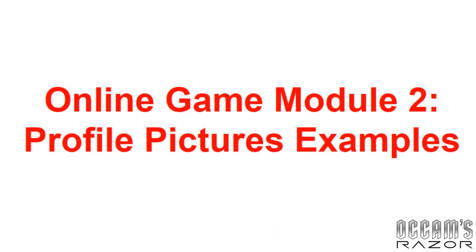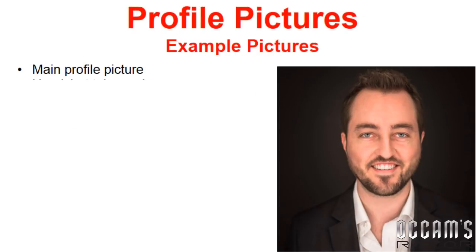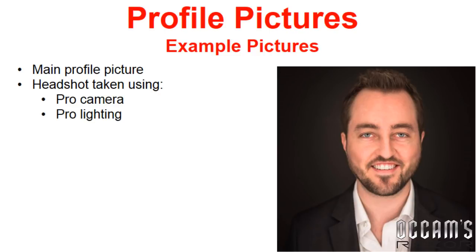In this module we're going to go through my profile picture examples. I'm going to explain why I picked the pictures I did and how I created them. This is my main profile picture for online dating. I'm not this attractive in real life, but I use some tricks to make myself a lot more attractive so that I would get more matches and more interest online. This headshot was taken using a professional camera, professional lighting, and a ring light.